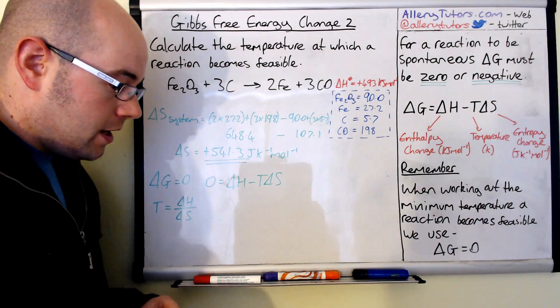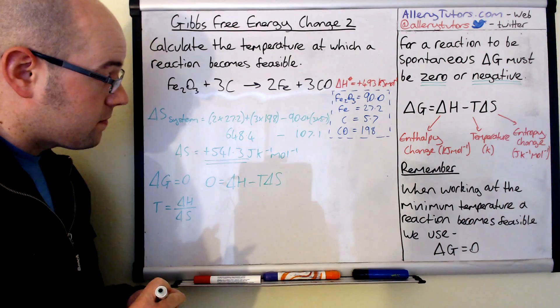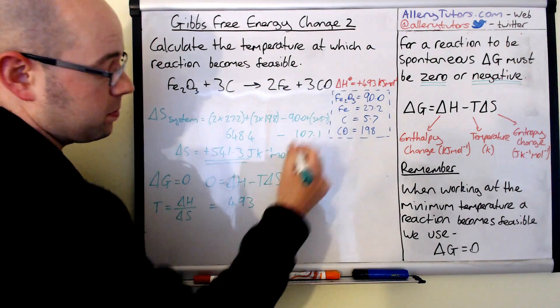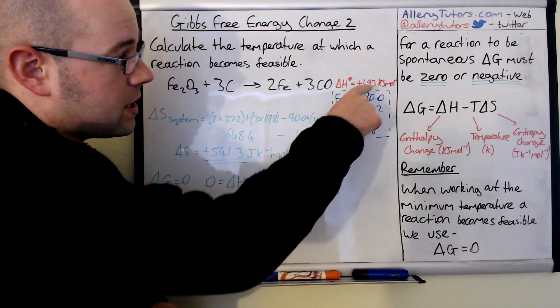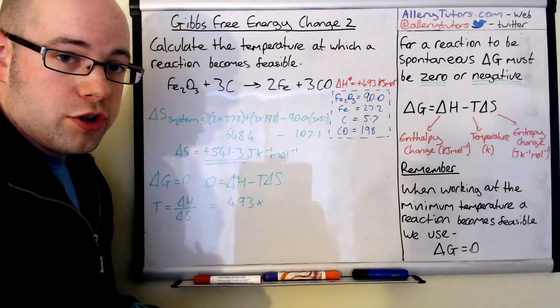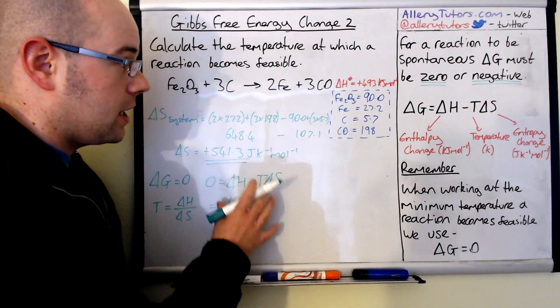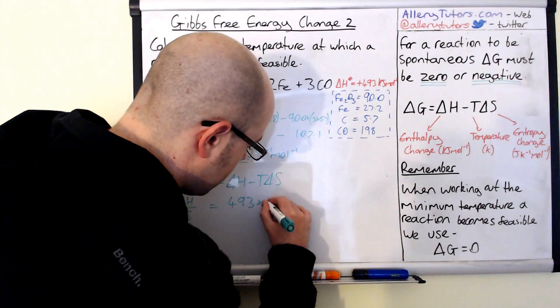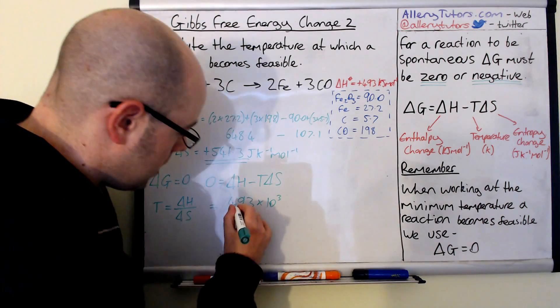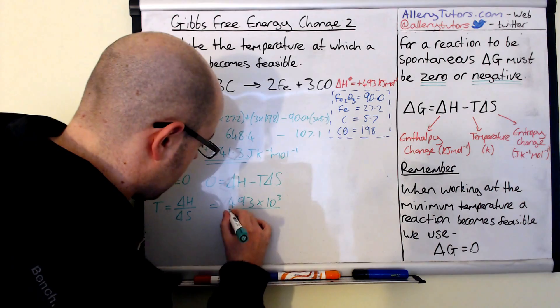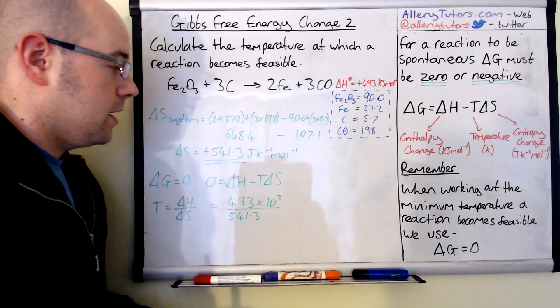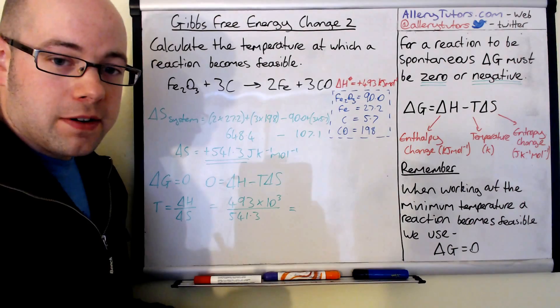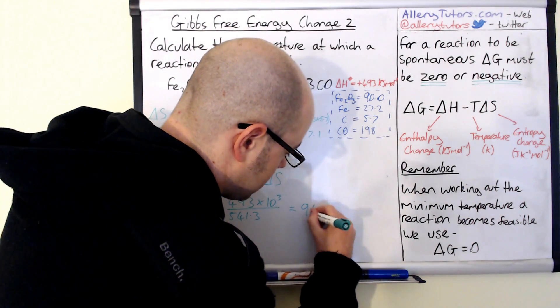We're going to put our values in here. Our values are going to be 493, which is the value of delta H. This is going to be multiplied by 1,000, because remember, this value here is in kilojoules per mole and our entropy value is in joules. So we have to convert, and this is really important, you must convert the kilojoules into joules per mole to make sure you get the right value for the temperature. It's 493 times by 10 to the 3, which just means multiplied by 1,000. We're going to divide that by the entropy, and the entropy here is 541.3, and that's joules per Kelvin per mole. If we get our calculator out and put these numbers in, then we should get a value of 910.8 Kelvin.